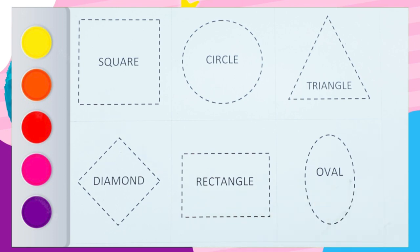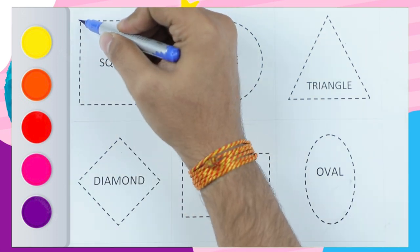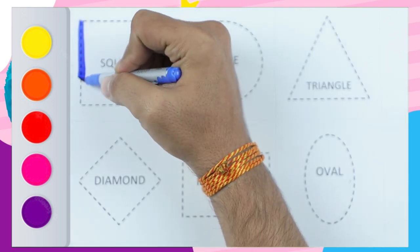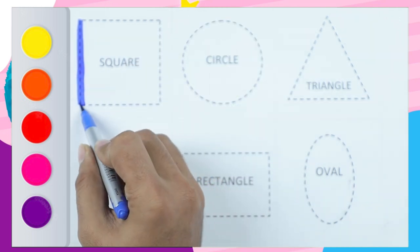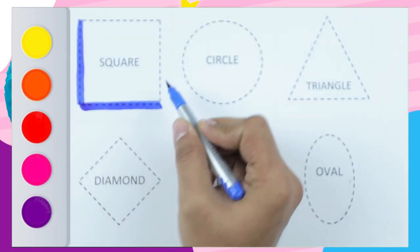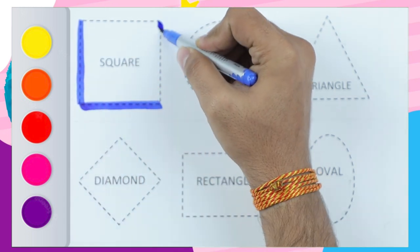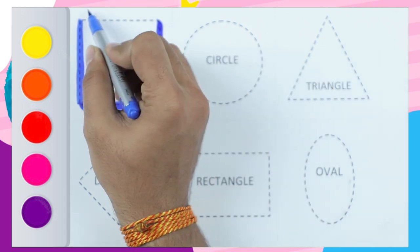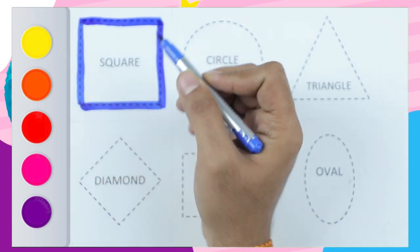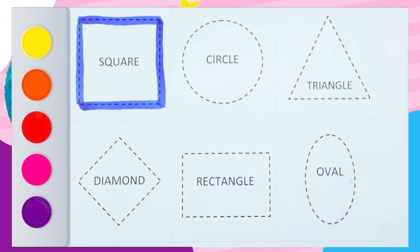Blue color square. Straight line, sleeping line, standing line, sleeping line — it's a square. Blue color square.